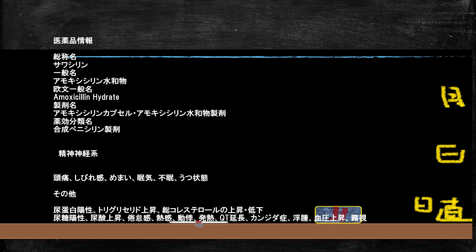薬剤惹起性うつ病を起こす薬として有名なものには、インターフェロン、副腎皮質ステロイド、降圧薬の類など様々ありますが、実は他にもたくさんあります。例えば、サワシリン（アモキシシリン）という合成ペニシリン系抗生物質もその一つです。